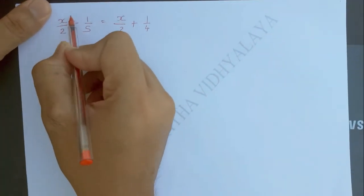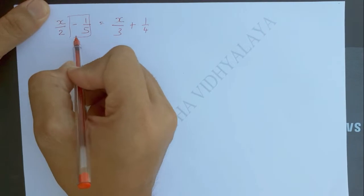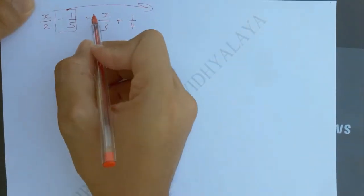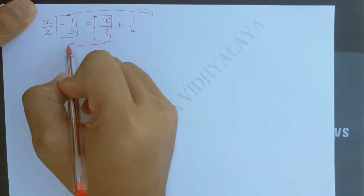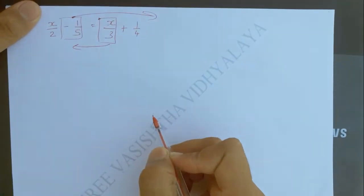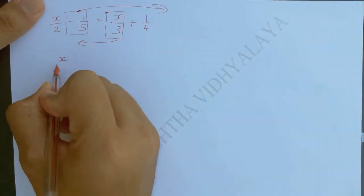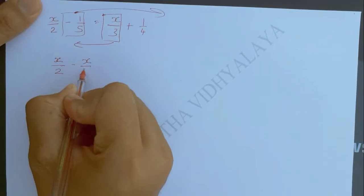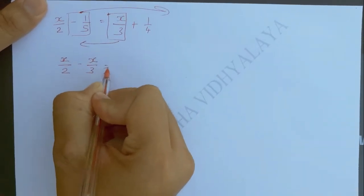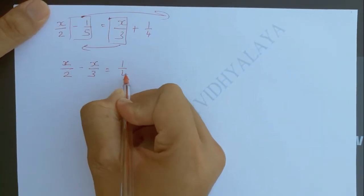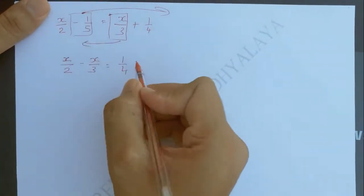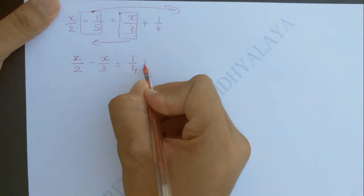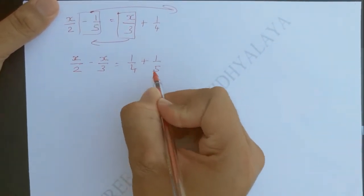Now, this one is constant, so we will transpose it to the RHS side. This one is variable, so we transpose it to the LHS side. So, x by 2 minus x by 3 equal to 1 by 4, and this minus 1 by 5 will be transposed to the RHS side, so it will be plus 1 by 5.